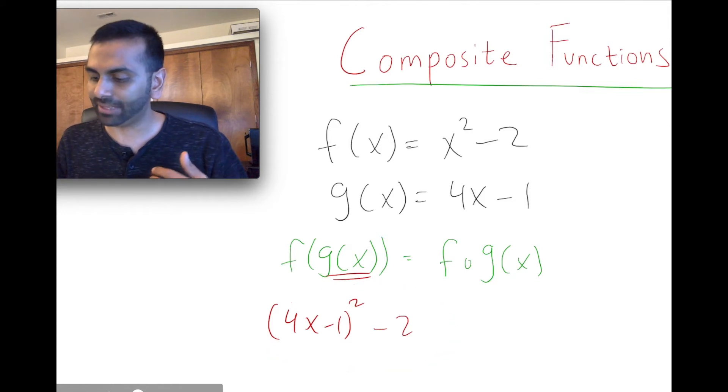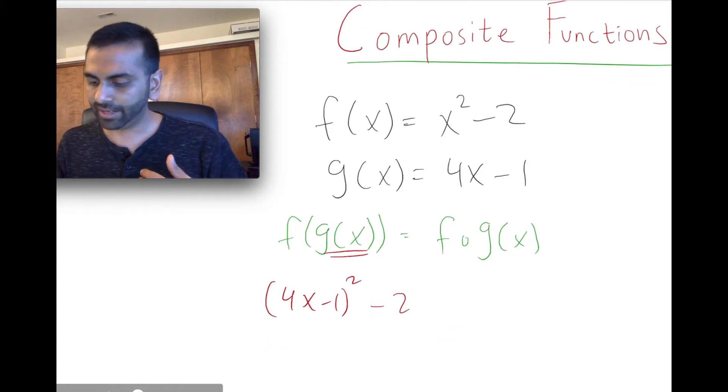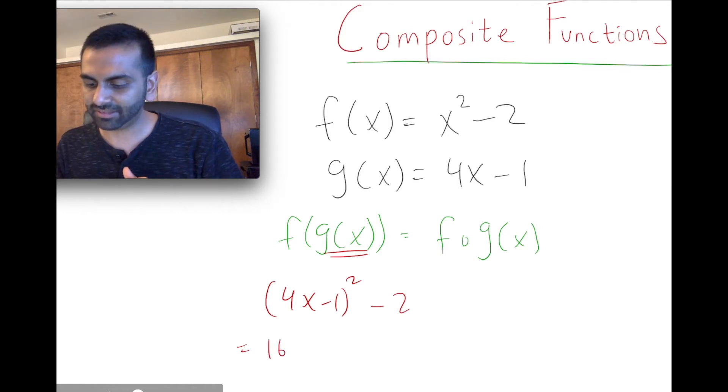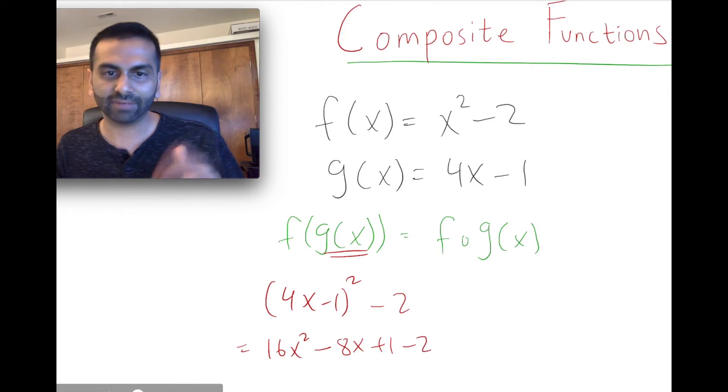Now, you could leave it like that. We could even simplify that. To simplify this, you could do the whole expanding thing. So that would be 16x squared minus 8x plus 1, and then we have a minus 2.